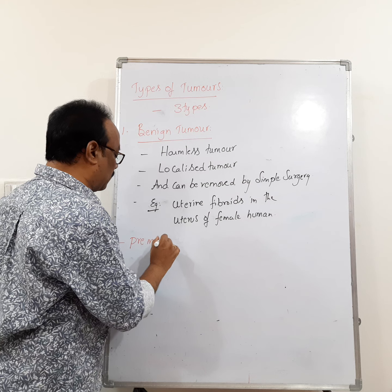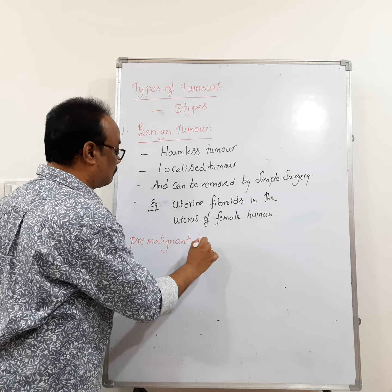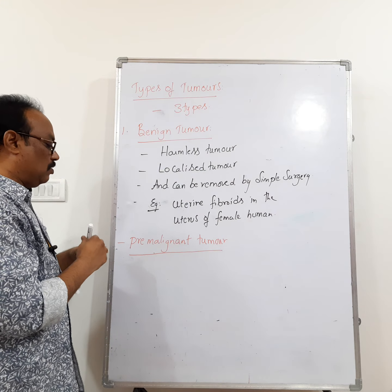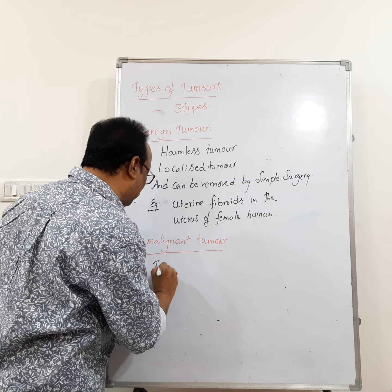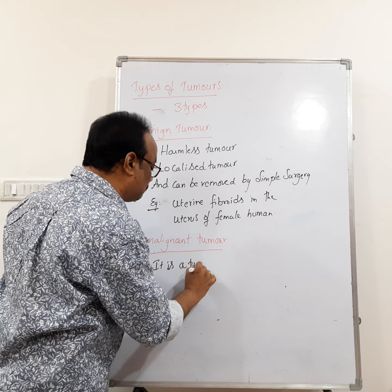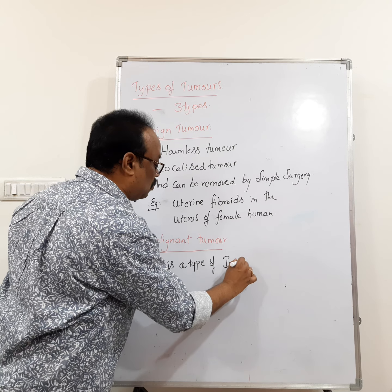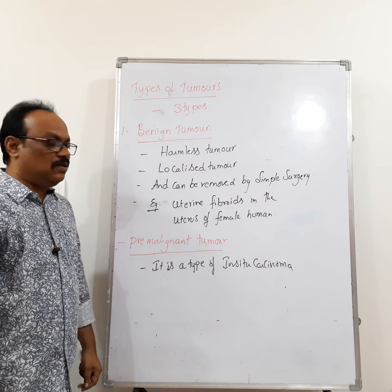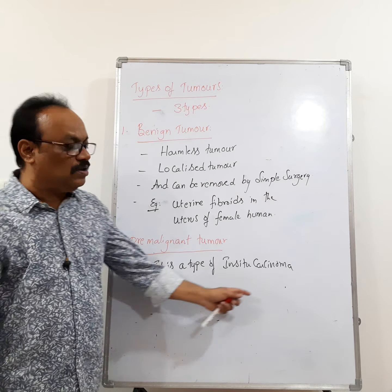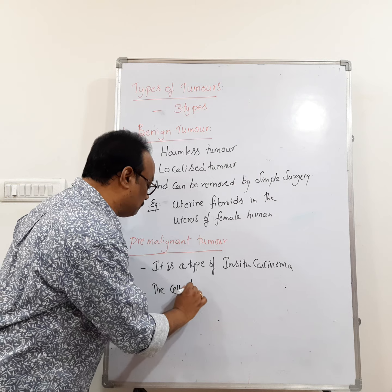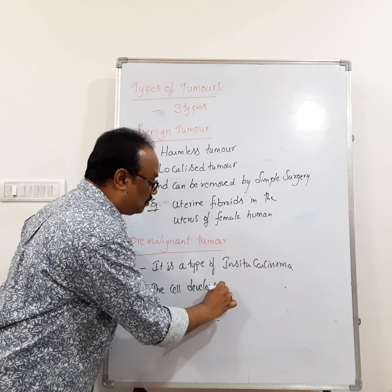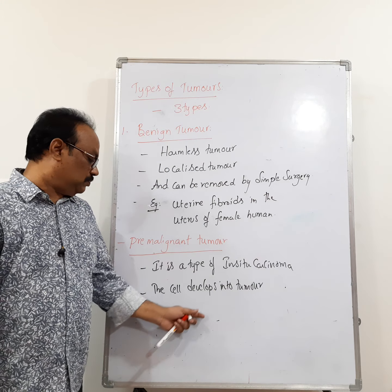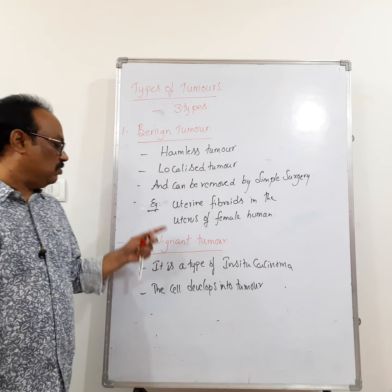The second type is the pre-malignant tumor. A pre-malignant tumor is a type of in-situ carcinoma — carcinoma means cancer. In this type, the cells are developing into tumors in the future.